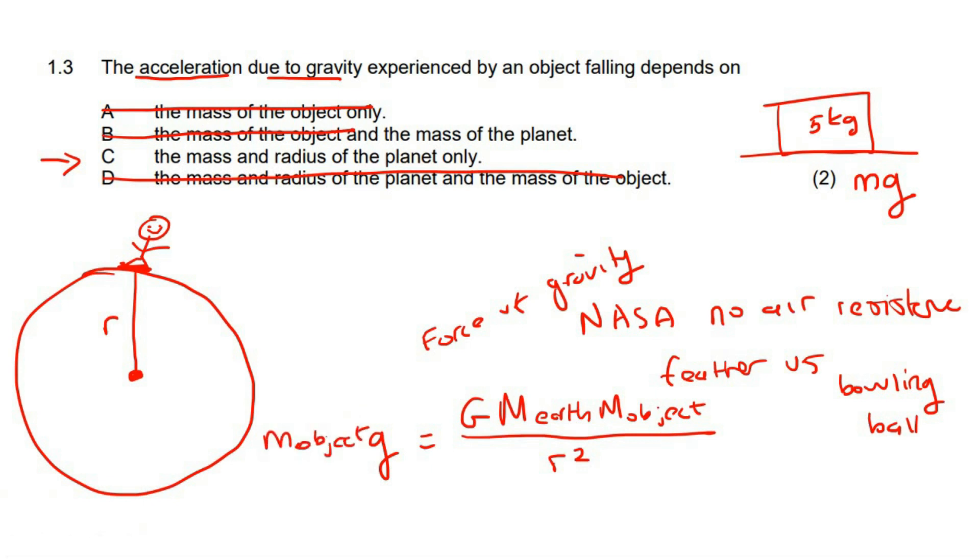So I can change this to M object. Now, check this out. On both sides of this equation, we've got mass object. So we can divide by mass object. Let's get rid of it.